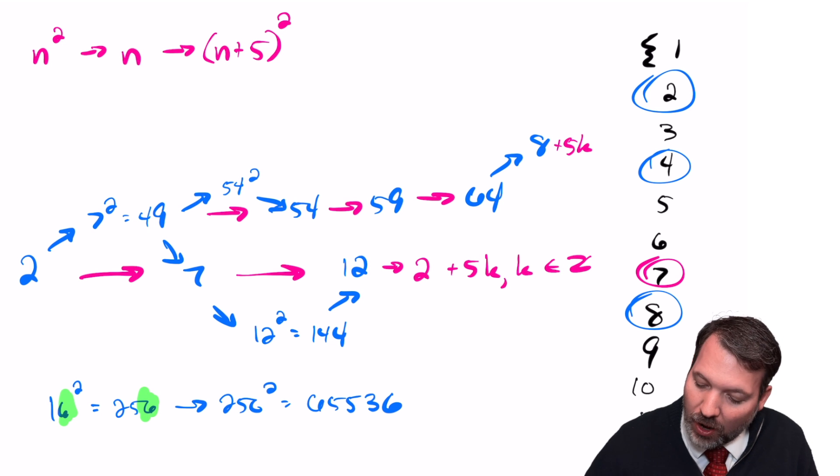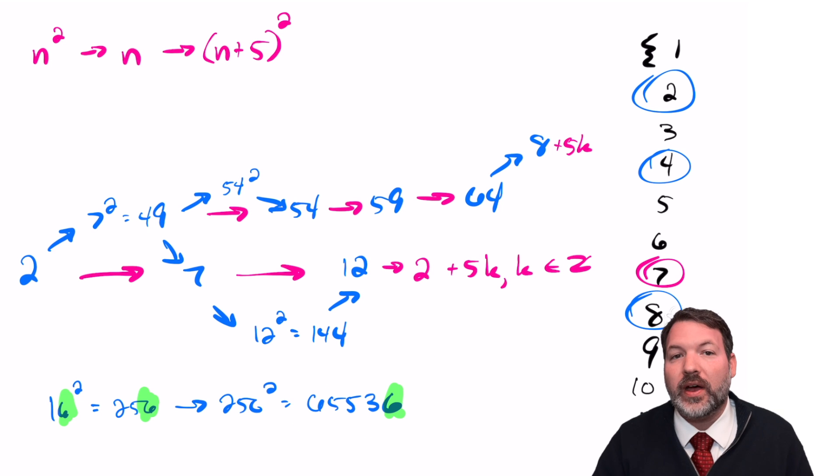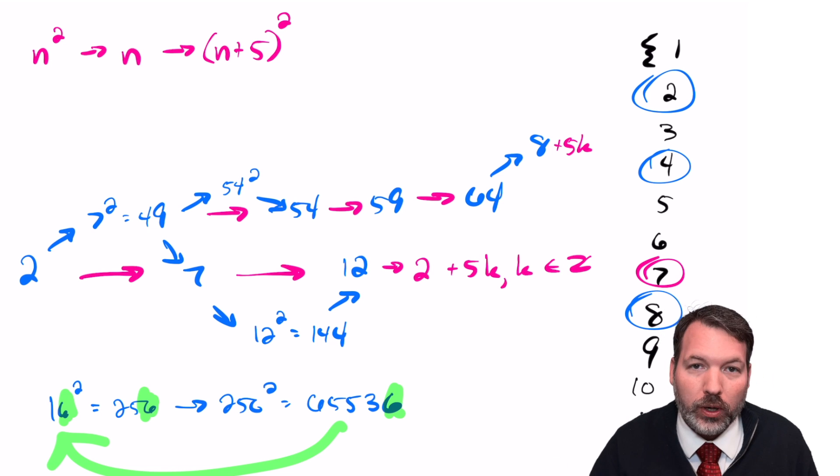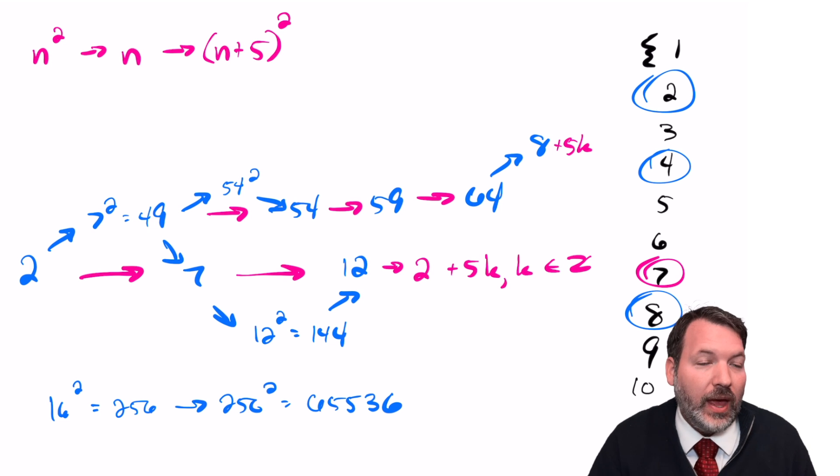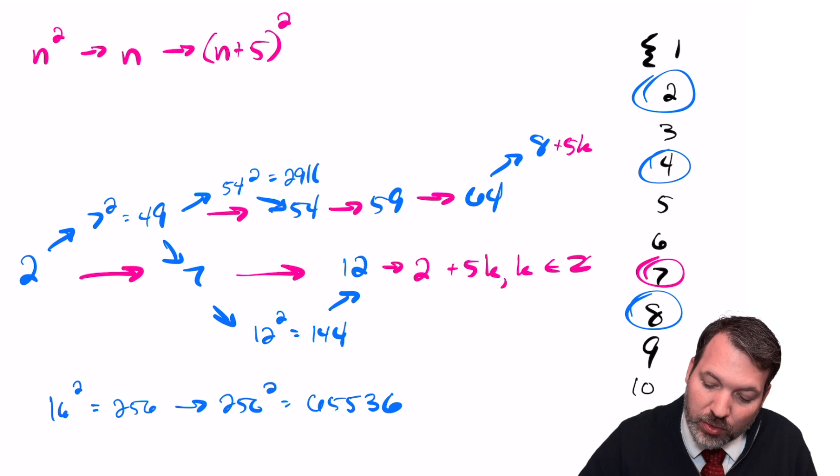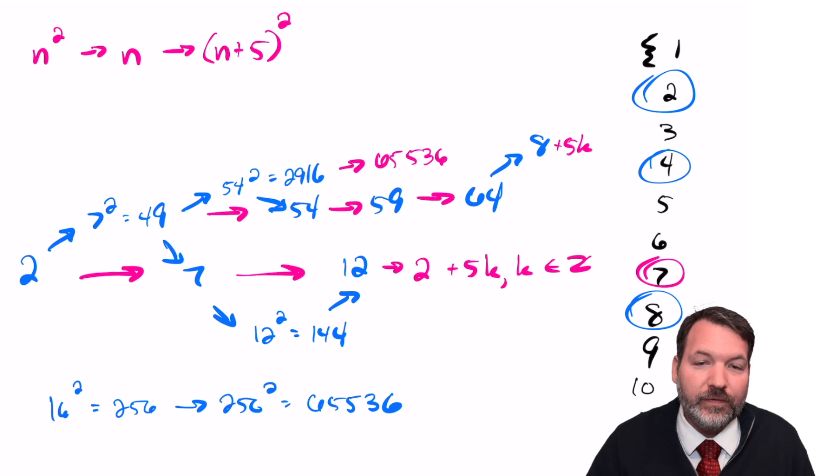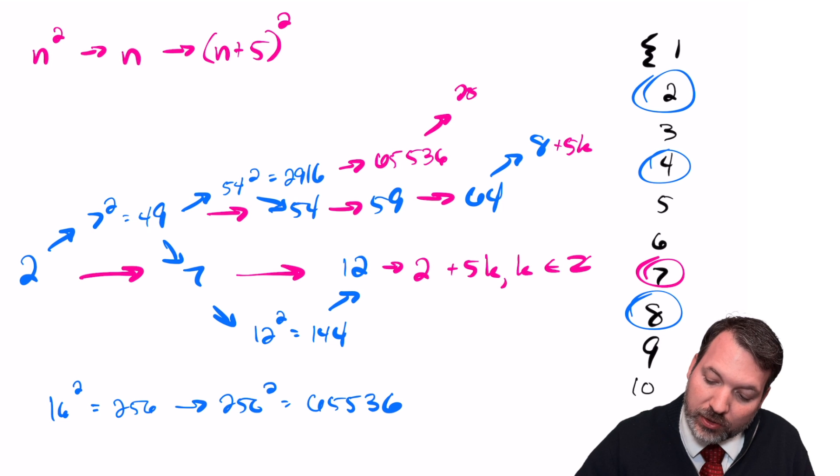In other words, what we're going to target now are some numbers that end in 6. Because if we can get some numbers smaller than 65,536 that ends in 6, eventually we'll get 65,536. And then we can work our way all the way backwards to 4. Fortunately, we can get such a number pretty easily because one of the numbers we've already worked with ended in 6. We didn't compute it earlier, but 54 squared happens to be the same thing as 2,916.